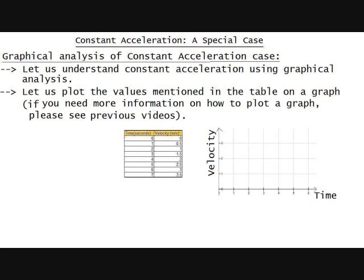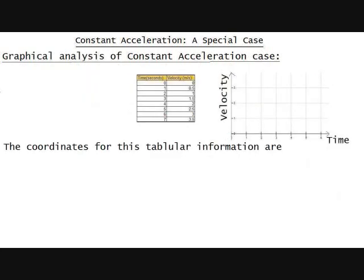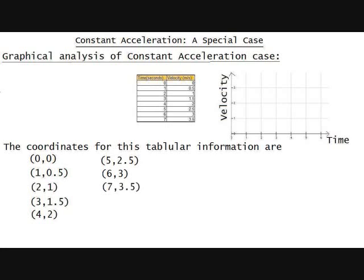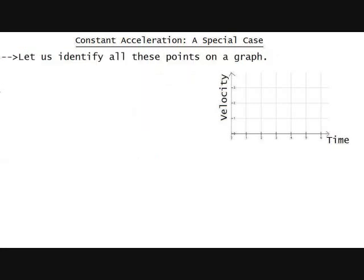The coordinates for this tabular information are (0,0), (1,0.5), (2,1), (3,1.5), (4,2), (5,2.5), (6,3), (7,3.5). Let us identify all these points on a graph.